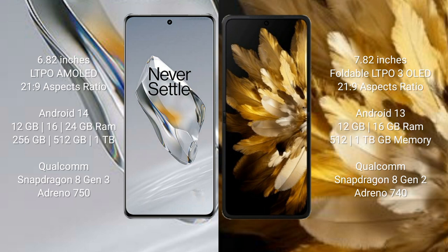OnePlus 12 comes with 12GB, 16GB, or 24GB RAM and 256GB internal storage options. It is powered by the Qualcomm Snapdragon 8 Gen 3 processor with GPU Adreno 750.